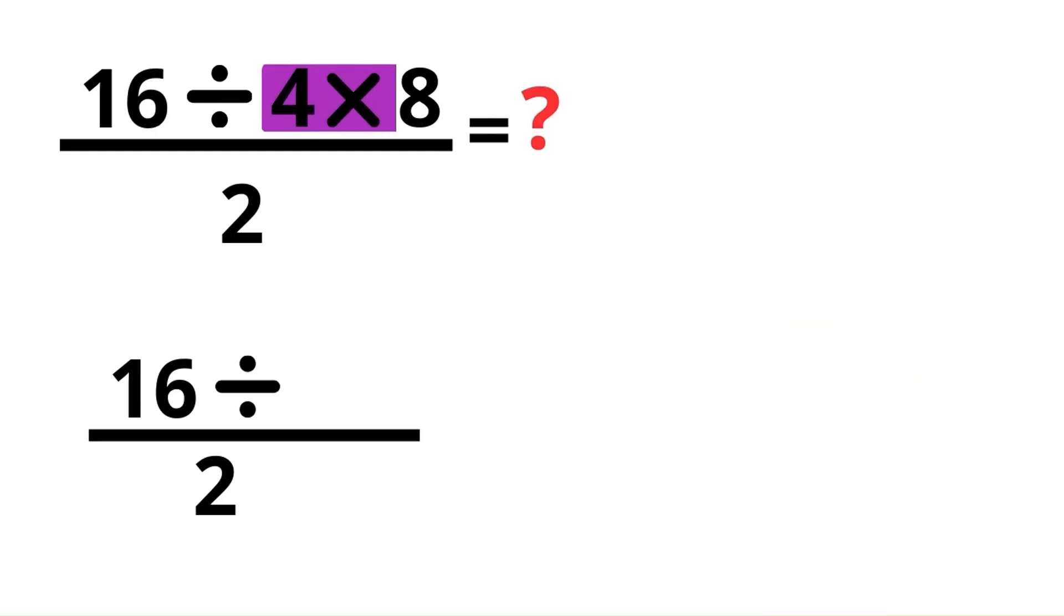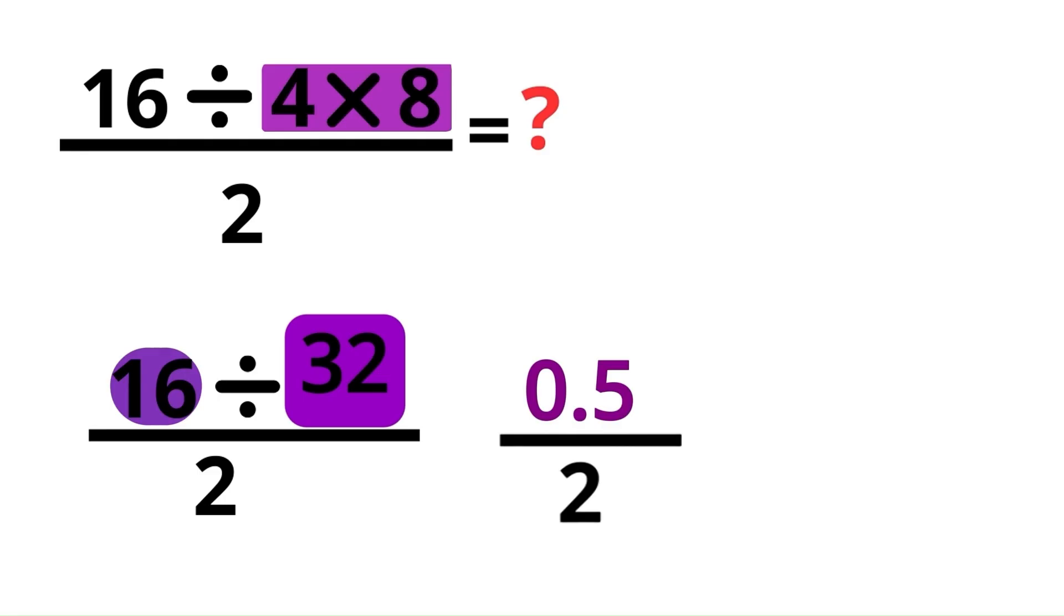Some might first do 4 times 8 and get 32, then divide 16 by 32 and get 0.5, then divide again by 2 and say the answer is 0.25. That seems neat but it's completely wrong.